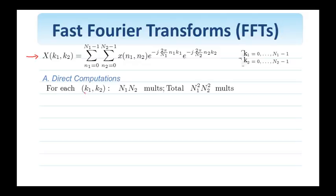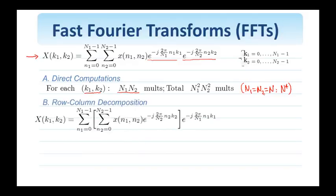So let's see how many multiplications we need if we directly compute the DFT. We see that for each frequency k1, k2, we need n1×n2 complex multiplications due to the multiplication of the signal by these complex exponentials. Since I have n1×n2 frequencies, I need n1²×n2² complex multiplications. Clearly, if n1 equals n2 equals n, then I need, in this case, n to the fourth complex multiplications.